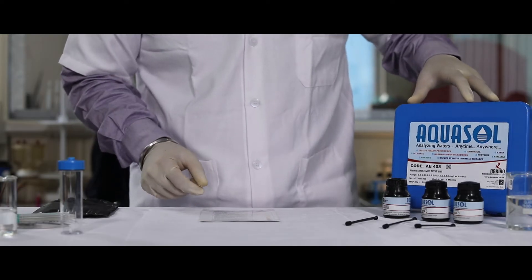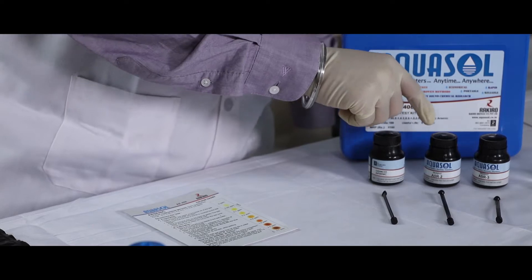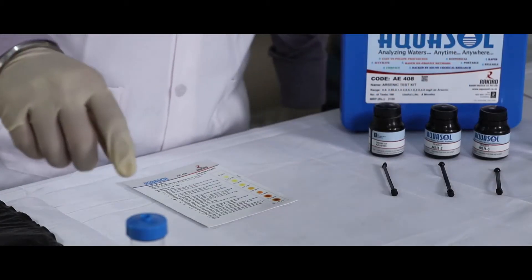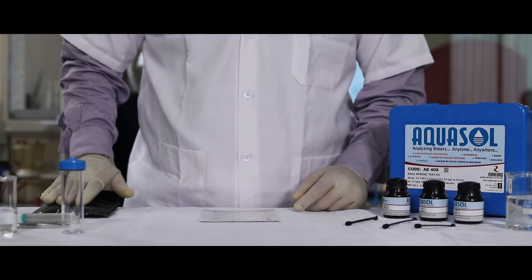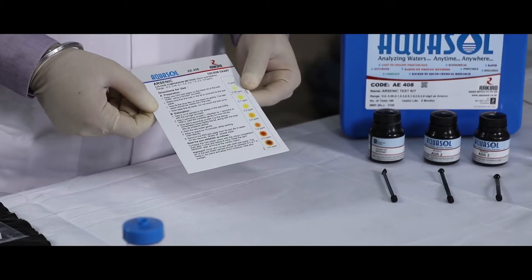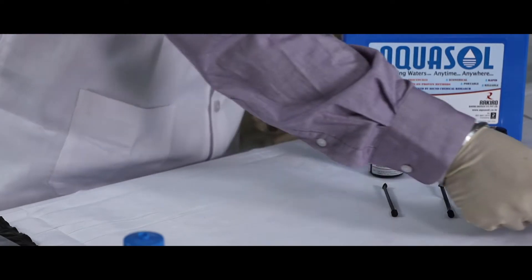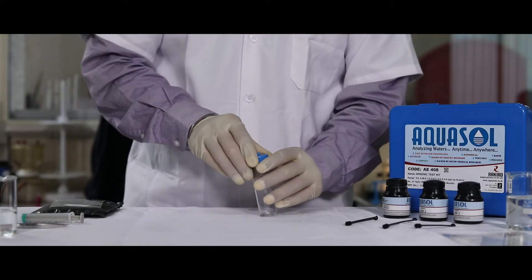This is an arsenic test kit consisting of ASR 1, 2, 3 along with the test bottle, a syringe, test paper, and a procedure card. Please read the procedure card to follow the instructions. To begin the test, remove the blue cap.